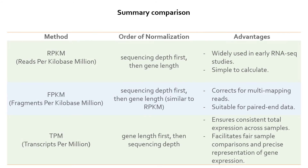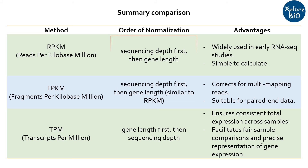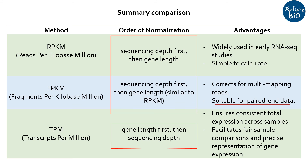To sum up, in both RPKM and FPKM, the first normalization is performed based on sequencing depth and then by gene length. Between RPKM and FPKM, FPKM is more suitable for paired-ended reads. And among the three, TPM is often considered the best choice because it normalizes for gene length first and ensures a consistent proportion across samples. You can consult a bioinformatician or statistician to find out which of these normalization parameters is most suited for your analysis.